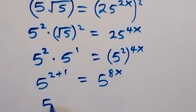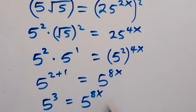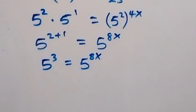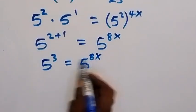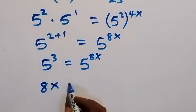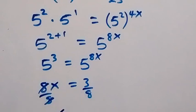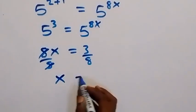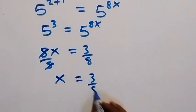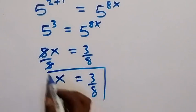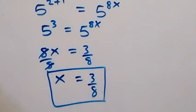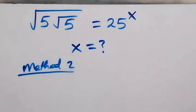This gives us 5 raised to power 3, which equals 5 raised to power 8x. Since the bases are the same, we equate the powers. We write 8x equals 3, then divide both sides by 8. The 8 cancels out, giving us x equals 3 over 8.